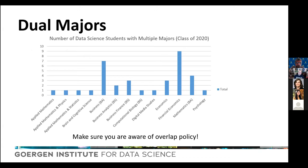Here at the university there's flexibility in how you plan your undergraduate major, and that's true even when planning a data science major. Many of our students are dual majors, combining data science with another discipline. The most popular combinations are data science with financial economics, data science and business, and data science and math. This has been a steady trend over the last couple of years — about 50% of our students are dual majors.